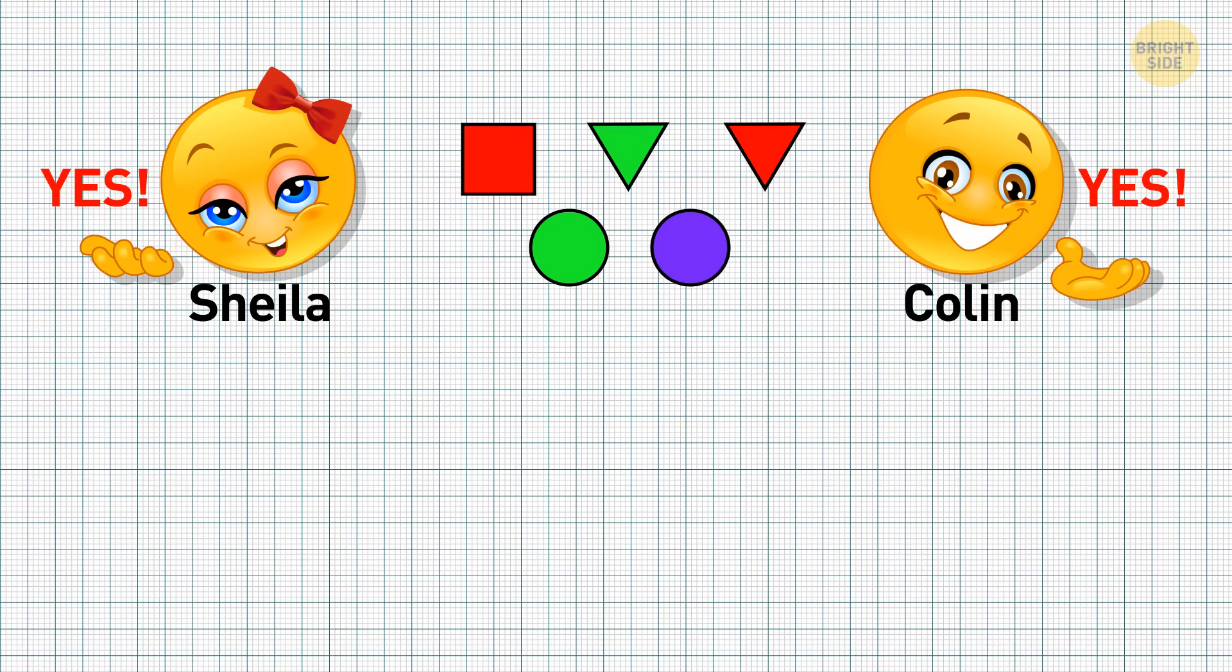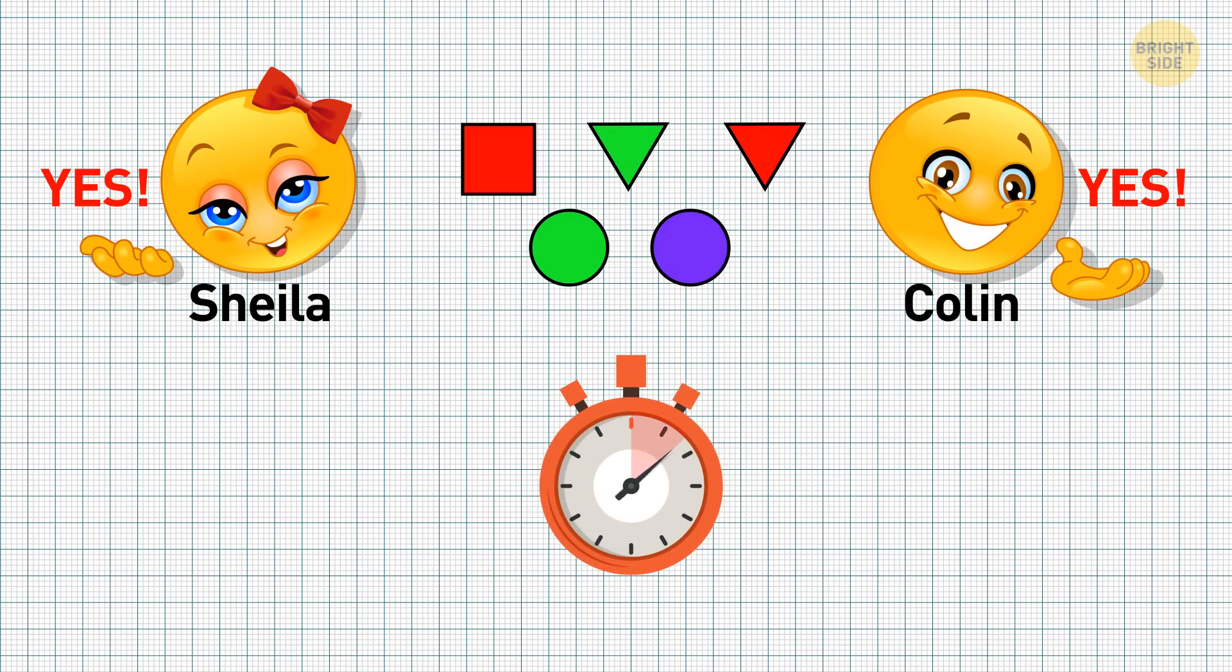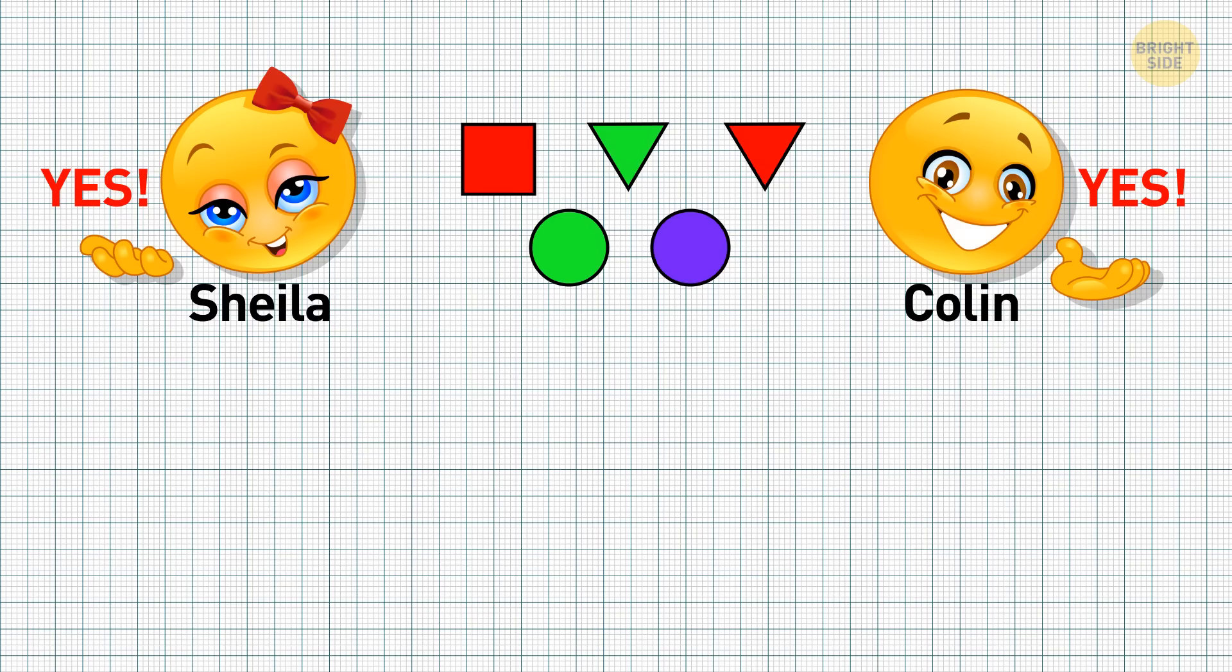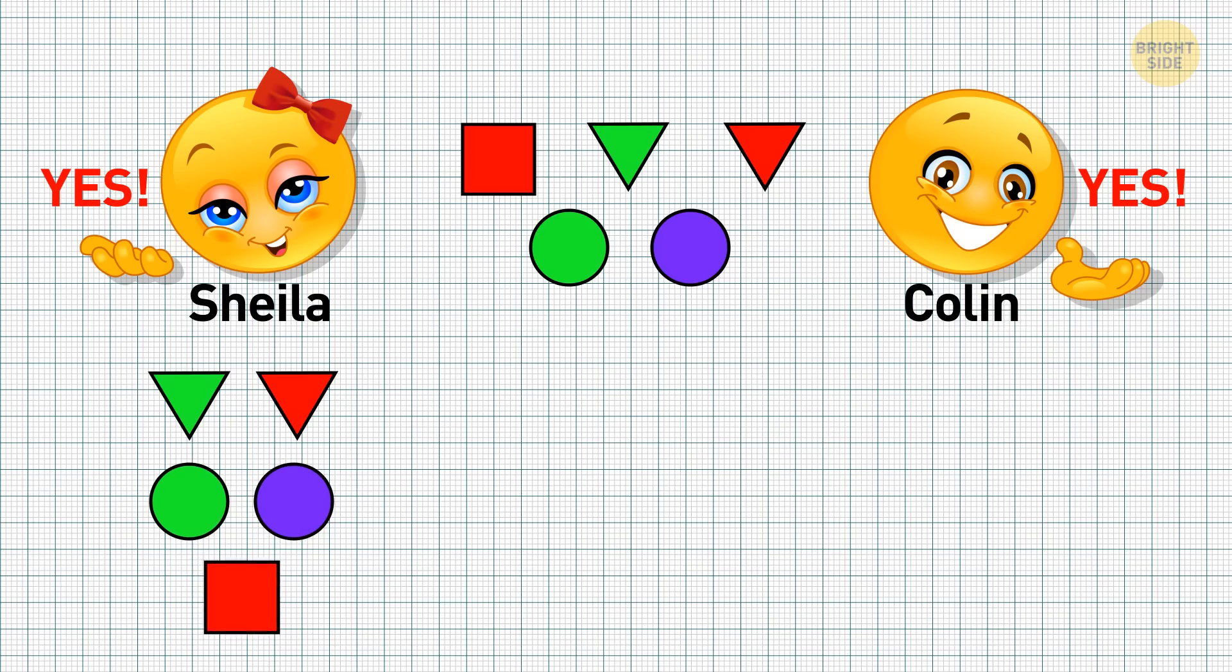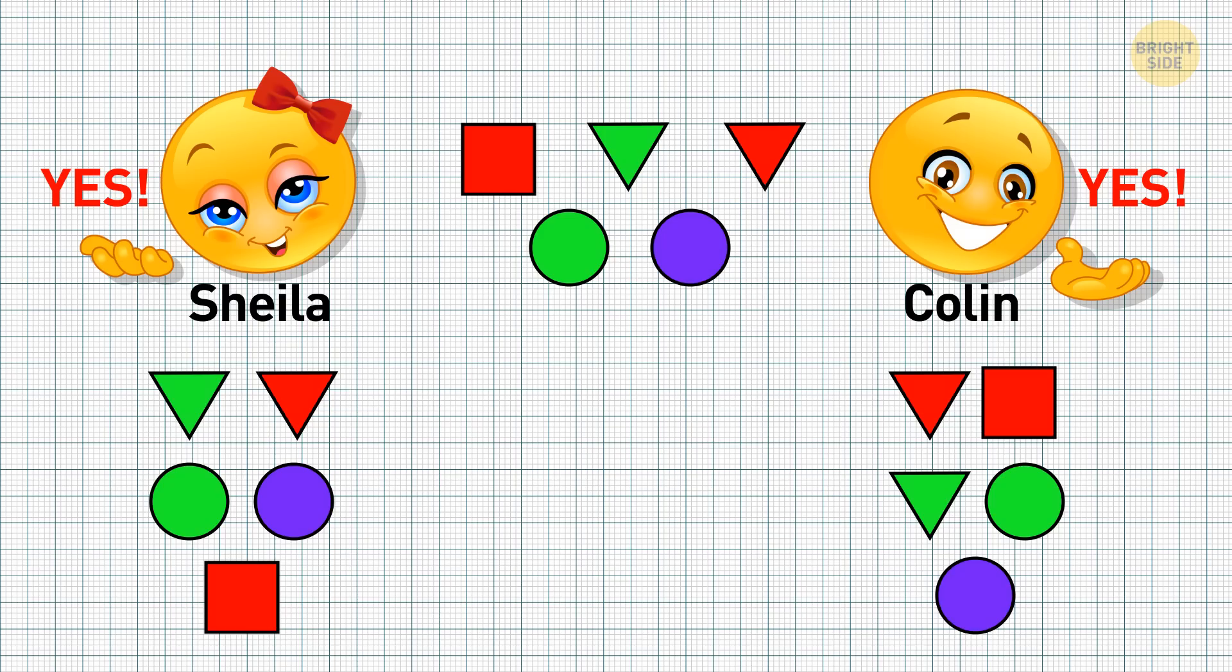So, Sheila was told the shape of the object. So, for her, it would be either the red or green triangle, either the green or purple circle, or the only square there is, the red one. Colin was told the color of the object. So, for him, it's either the red triangle or square, either the green triangle or circle, or the only purple circle there is. When the host asked whether either of them knew where the prize was, and they answered no, they both got new information. For Sheila, it was definitely not the square. And since Colin didn't know the answer either, it wasn't the purple circle. Colin used the same reasoning, so they both eliminated two options.